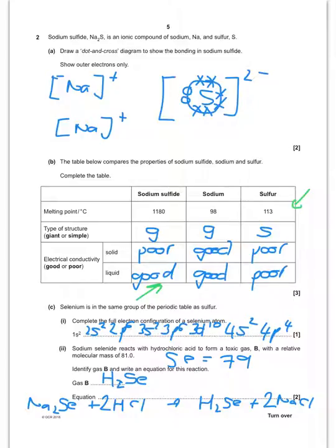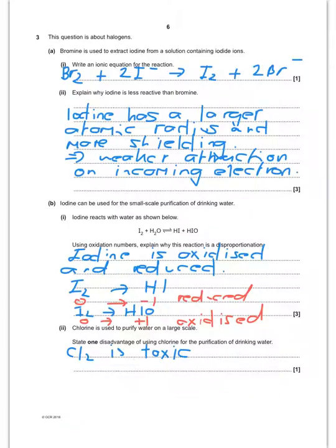So I've then completed the electronic configuration of the selenium atom. Should be quite straightforward. Selenium. Sodium selenide reacts with HCl to give a toxic gas with a molar mass of 81. What is that gas? We've looked at the periodic table. The molar mass of selenium is 79, so take away 79 and you're left with 2 from 81. So it's going to be H2Se and I've given the equation there.